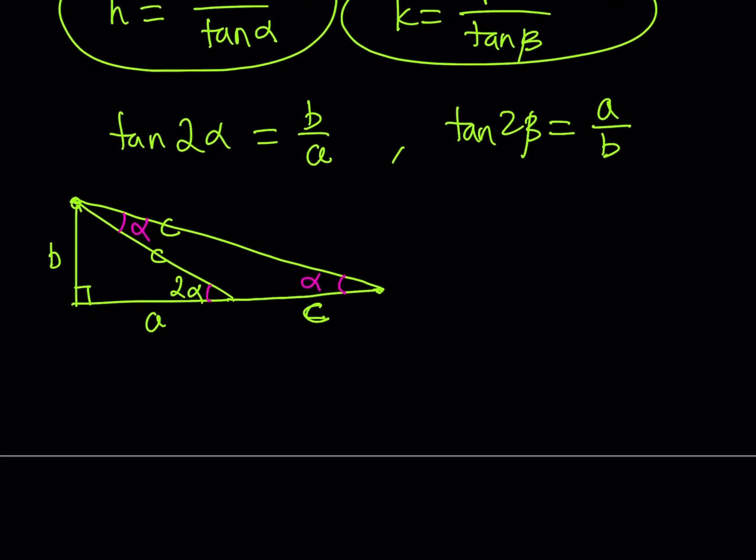So what is that supposed to mean? Well, it means that the base angles are congruent and from exterior angle theorem is 2 alpha. Therefore, this is alpha and this is alpha. Beautiful. From here, what am I going to get? I'm going to get tangent alpha. Tangent alpha can be written as B over A plus C. Beautiful.